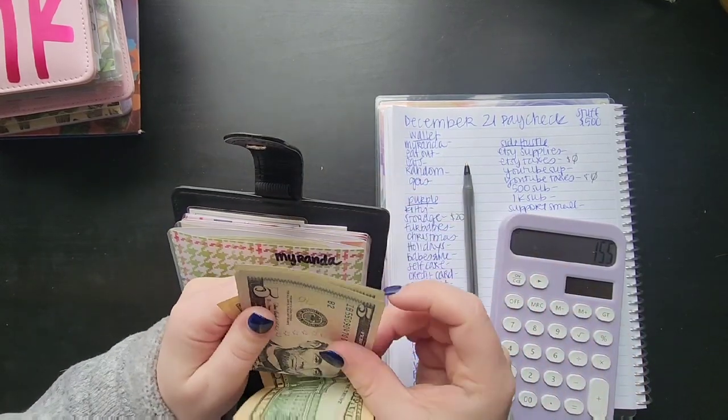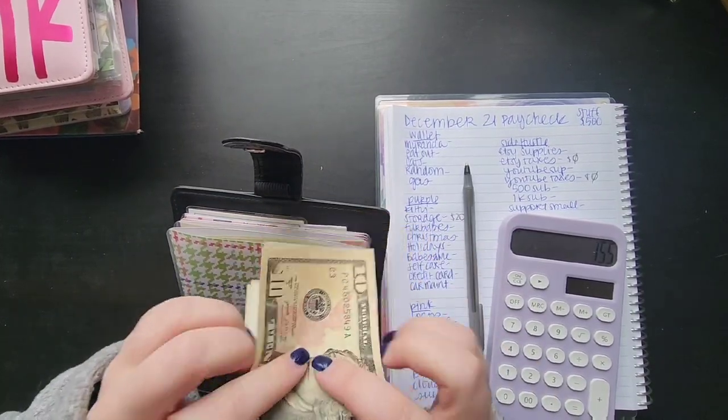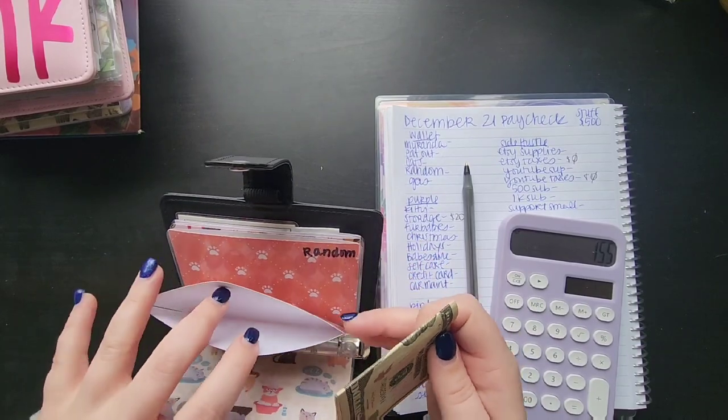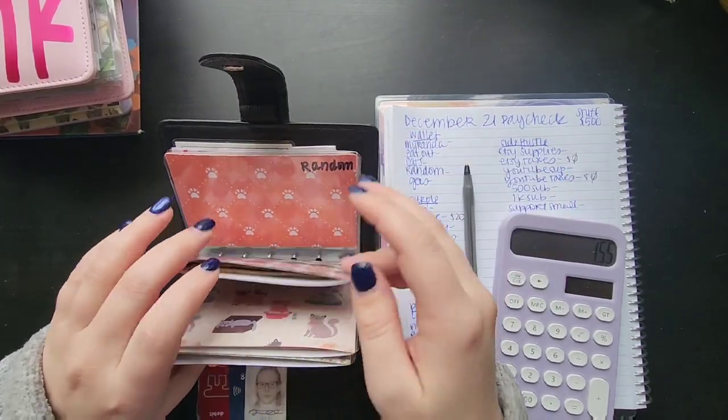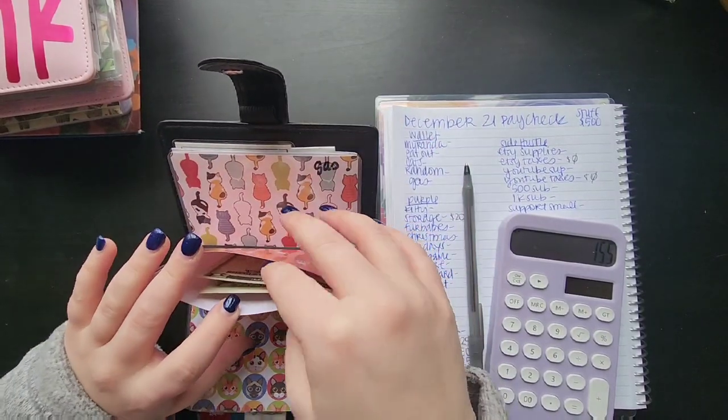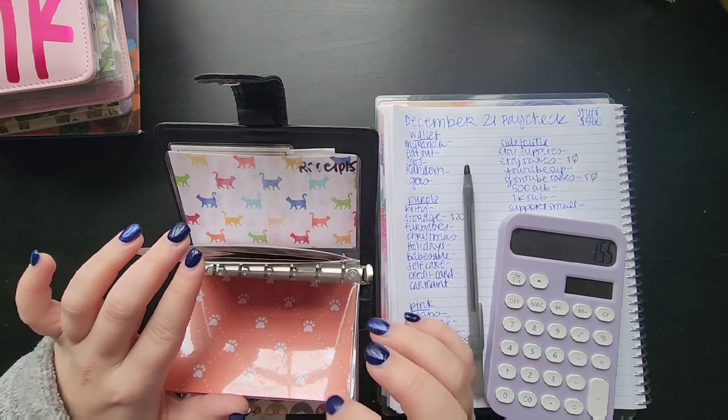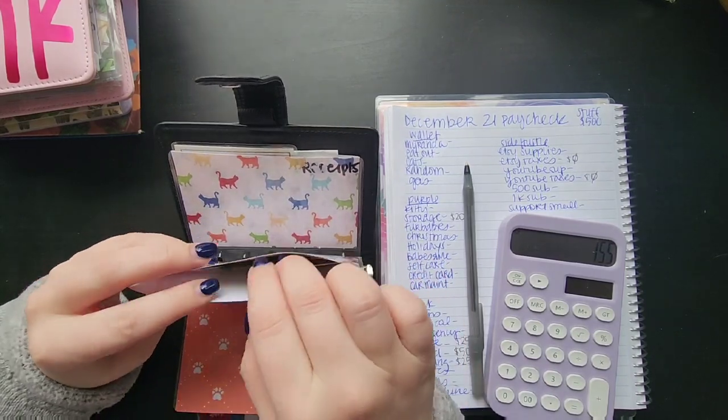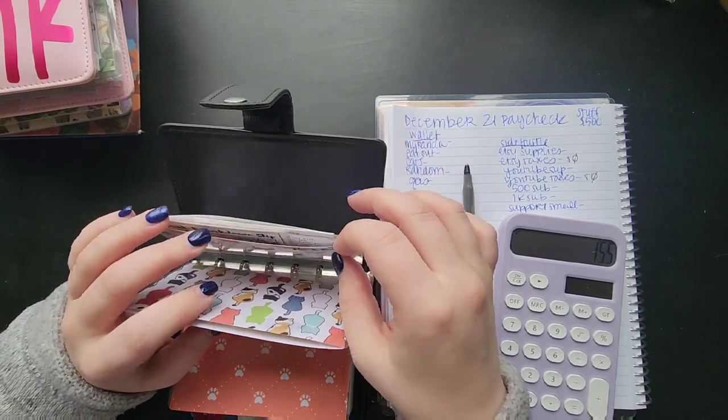I have five dollars still in eating out. The cat's envelope hasn't changed but it's not going to get anything in it. That's 20 in it. As I've talked about before, the pretty kitty challenge that Don gifted me is going to go in this envelope. Random has five dollars in it and it's not going to get anything.